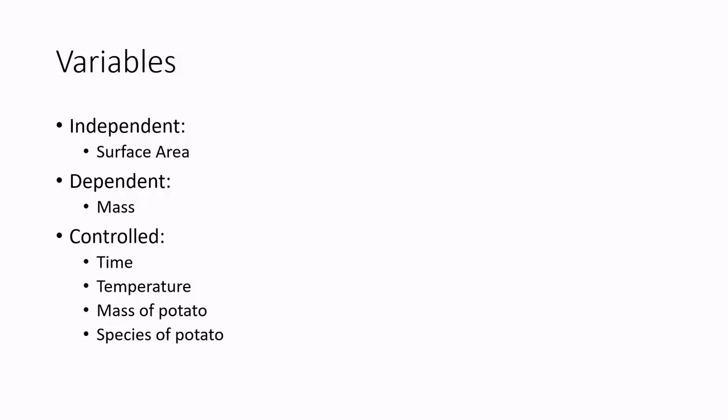So, to summarize then, the variables that we need to control are time, temperature, mass of potato and species of potato, if we're being really picky. However, the size and the species of potato cubes was decided for us in the question, so we don't need to worry about these.